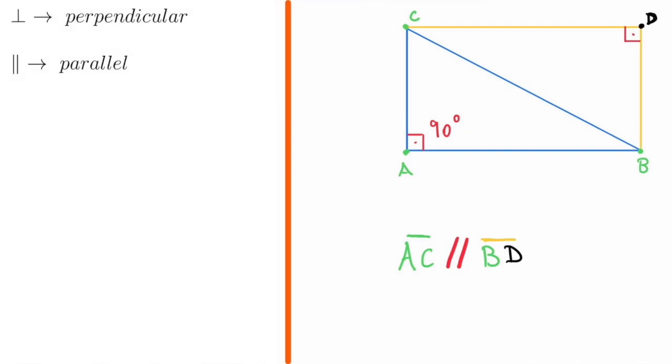Parallel. Now, having a rectangle ABC, the sides AC and BD are clearly parallel to each other.